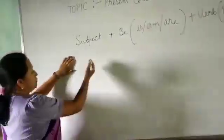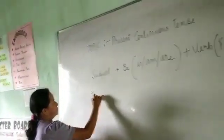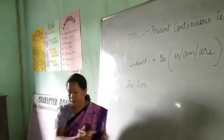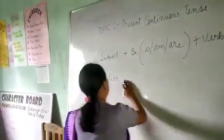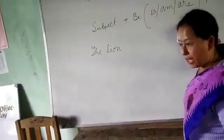Subject. I will say the lion. The lion will be doing the action. The lion. Now, we will write a be verb.